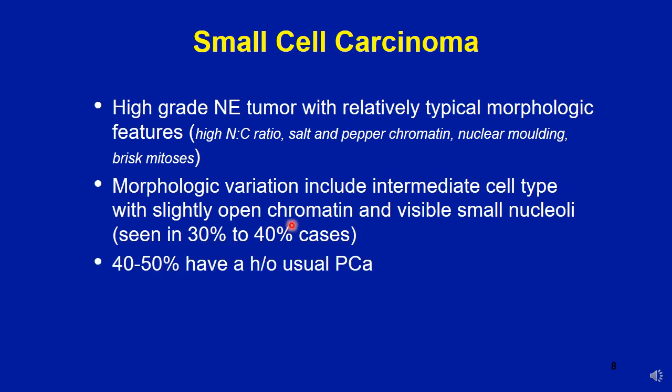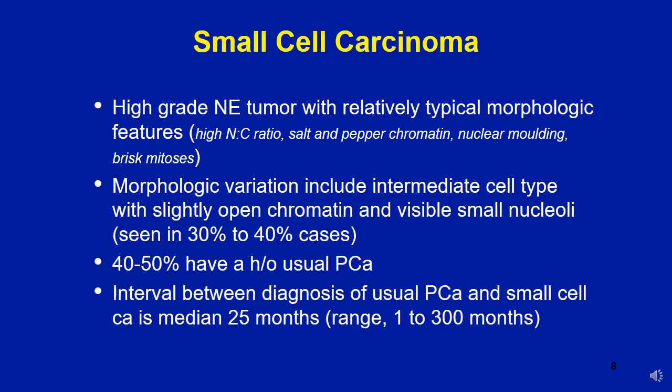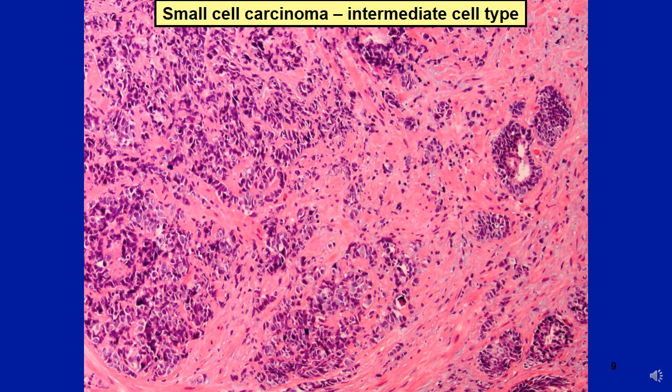The majority of these cases have a history of usual prostate carcinoma, so when you see small cell neuroendocrine carcinoma in either a primary or metastatic setting, it is always a good idea to trace the history of prostate cancer for these patients. The interval between diagnosis of usual prostate carcinoma and small cell neuroendocrine carcinoma is about a median of 25 months, with a range of 1 to 300 months.